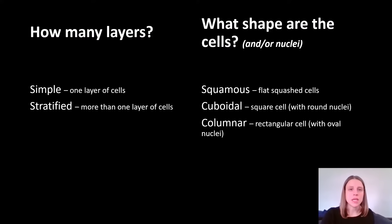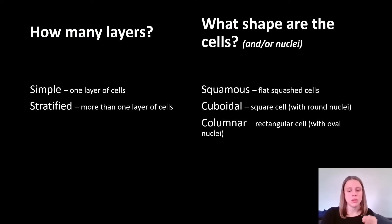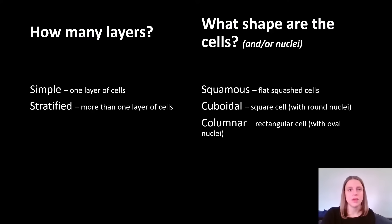The only slight trouble occurs when sometimes cuboidal cells might look a little bit rectangular. In that case, look at the nuclei. If the nucleus is a nice little circle, it's going to be cuboidal. If it is an oval, it is going to be columnar.